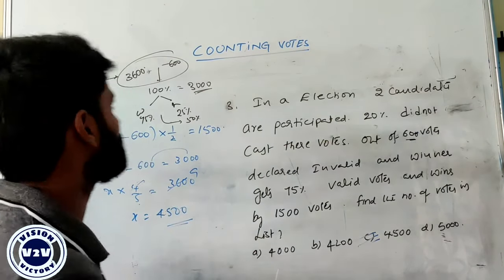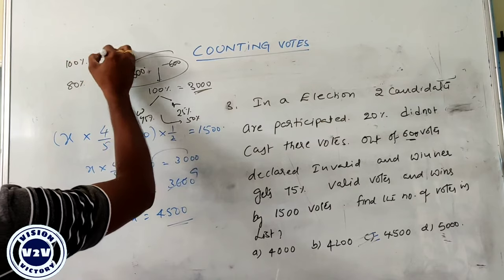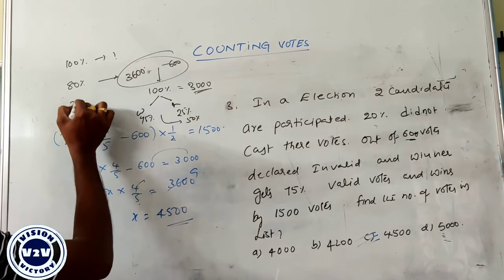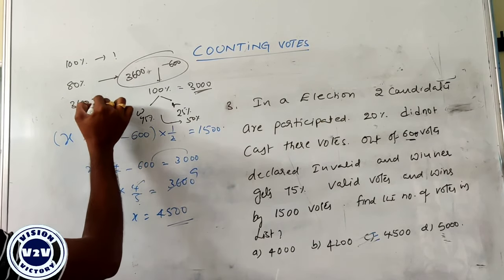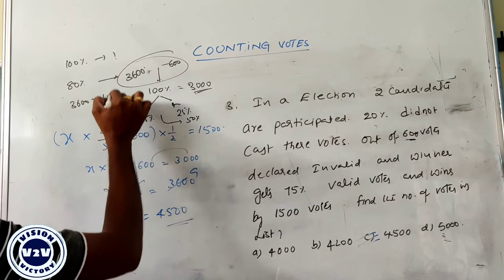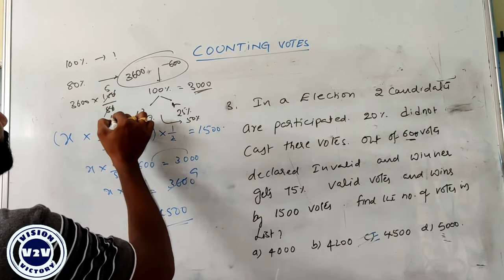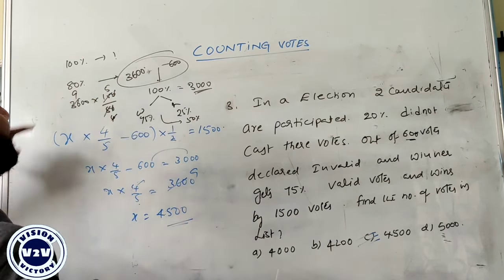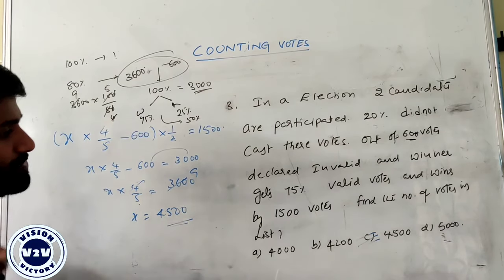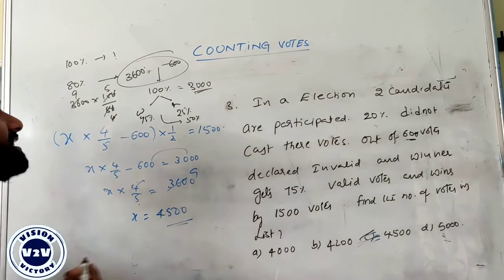Because 20 percentage did not vote, then 100 percentage becomes how much — that is our question. So 3,600 into 100 by 80: zeros cancel, giving 4,500. So the answer is 4,500. This is the other calculation.